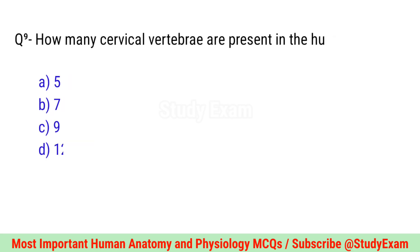Question number nine. How many cervical vertebrae are present in the human spine? Correct option is B. Seven.